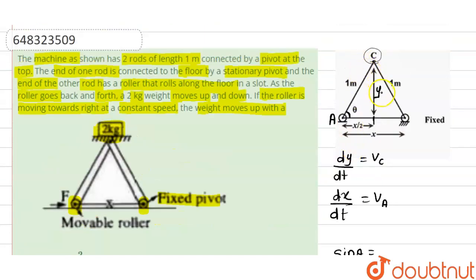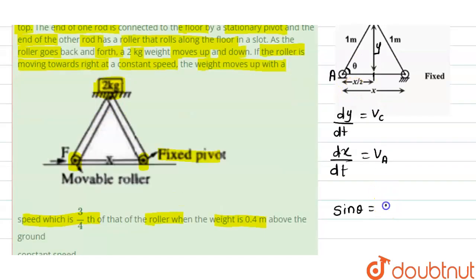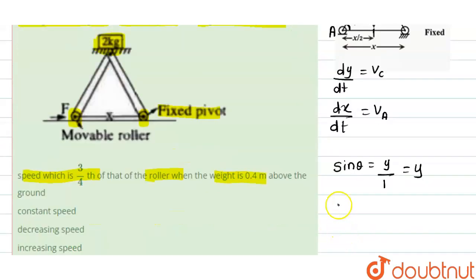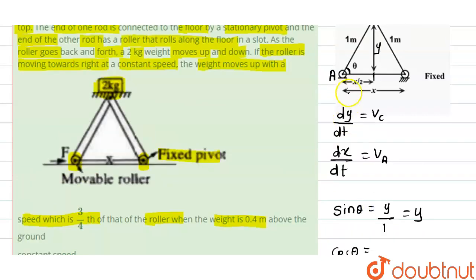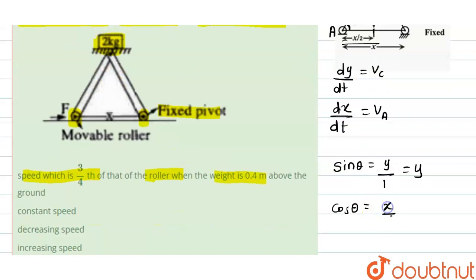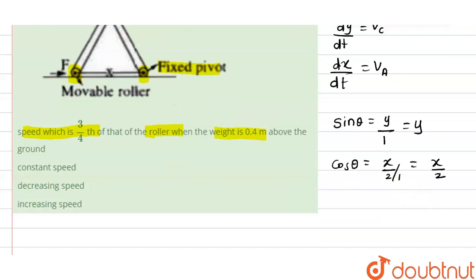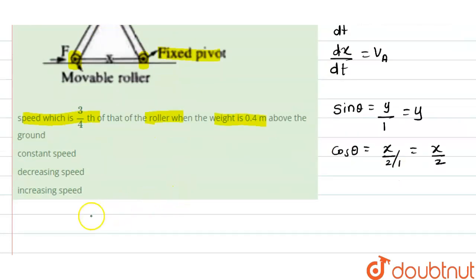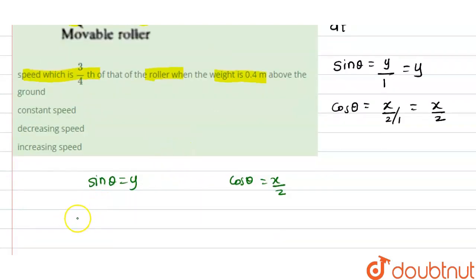From the diagram we can calculate sin θ and cos θ. Sin θ equals the opposite side divided by the hypotenuse: the opposite side is y and the hypotenuse is 1, so sin θ equals y. Cos θ equals the adjacent side divided by the hypotenuse: the adjacent side is x/2 and the hypotenuse is 1, so cos θ equals x/2. Now we differentiate sin θ and cos θ with respect to time: differentiating sin θ gives cos θ · dθ/dt = dy/dt.